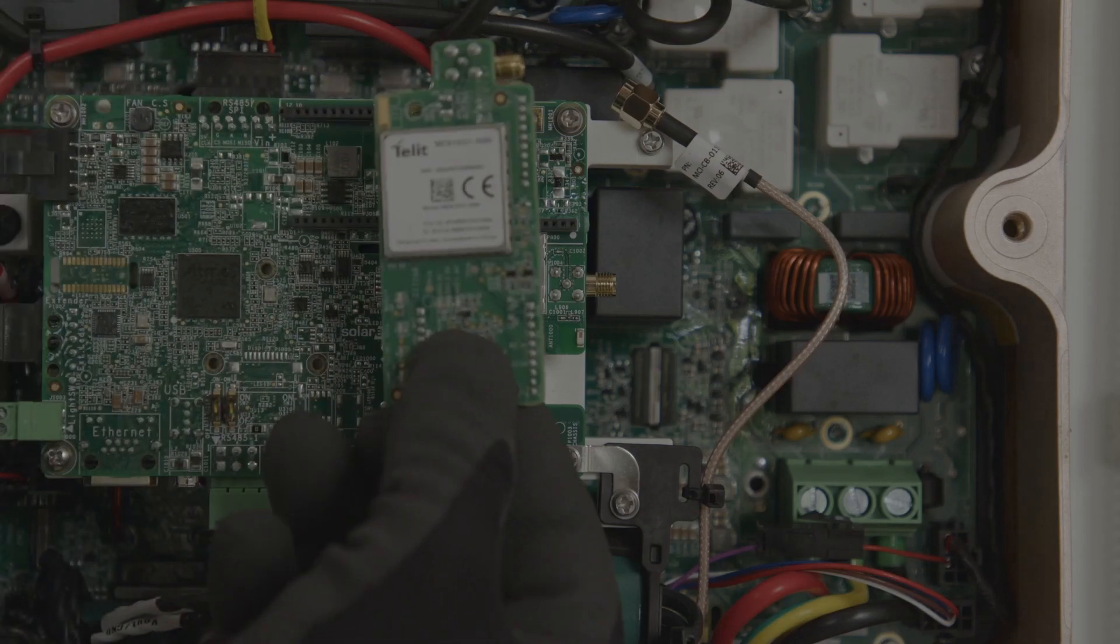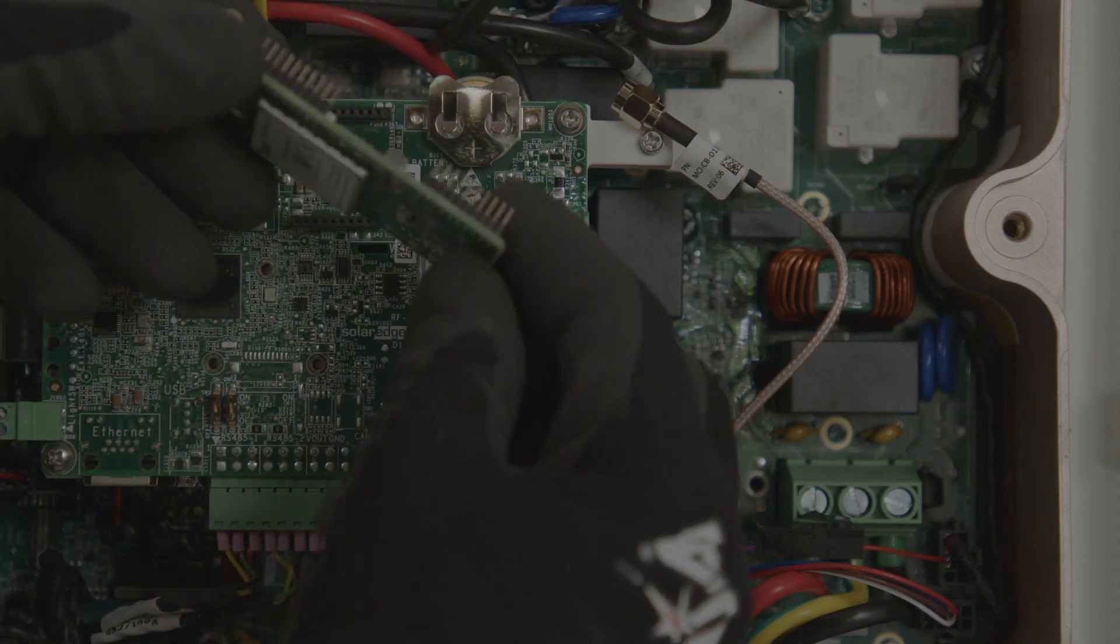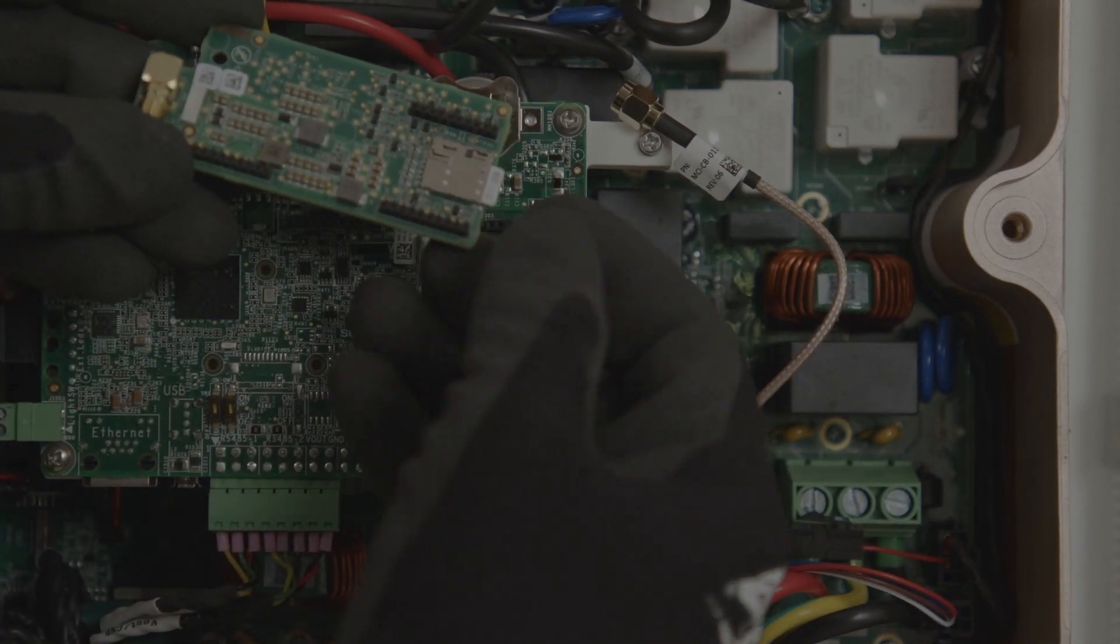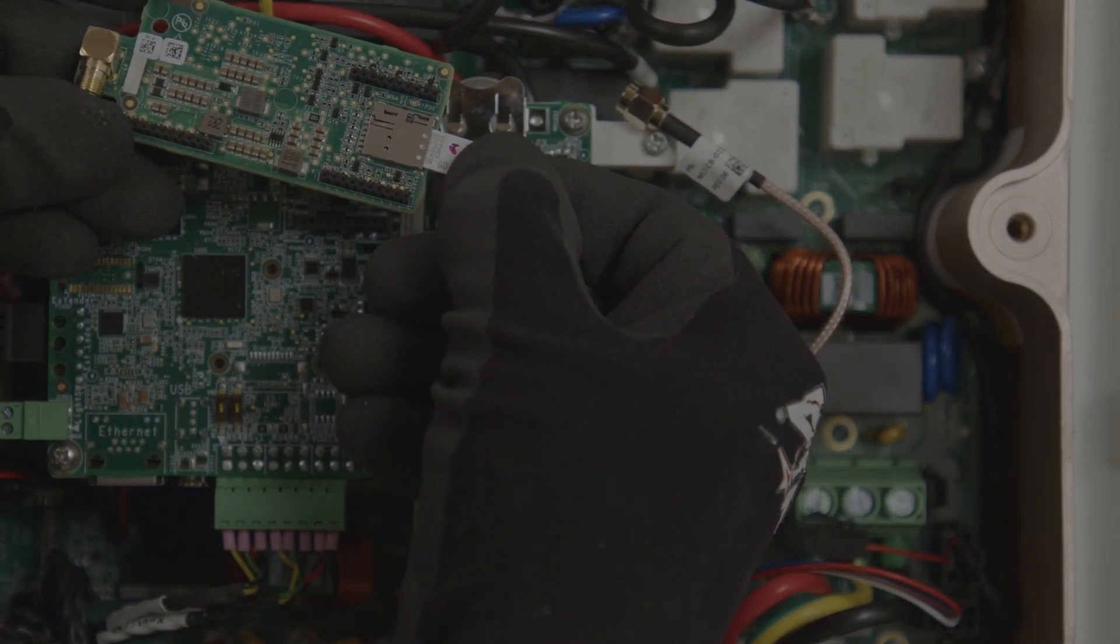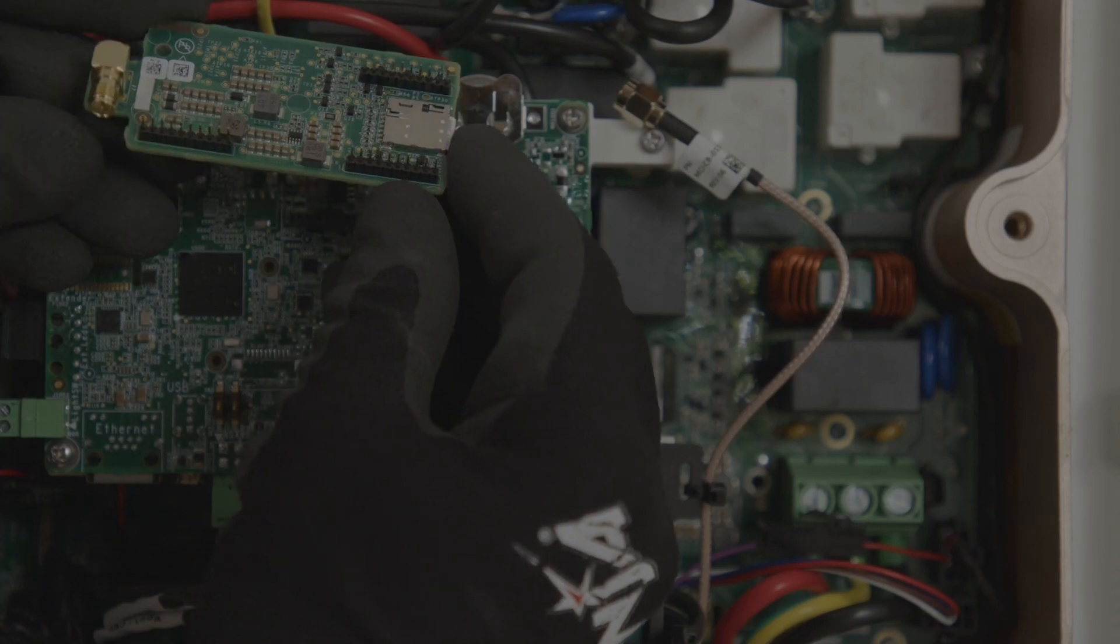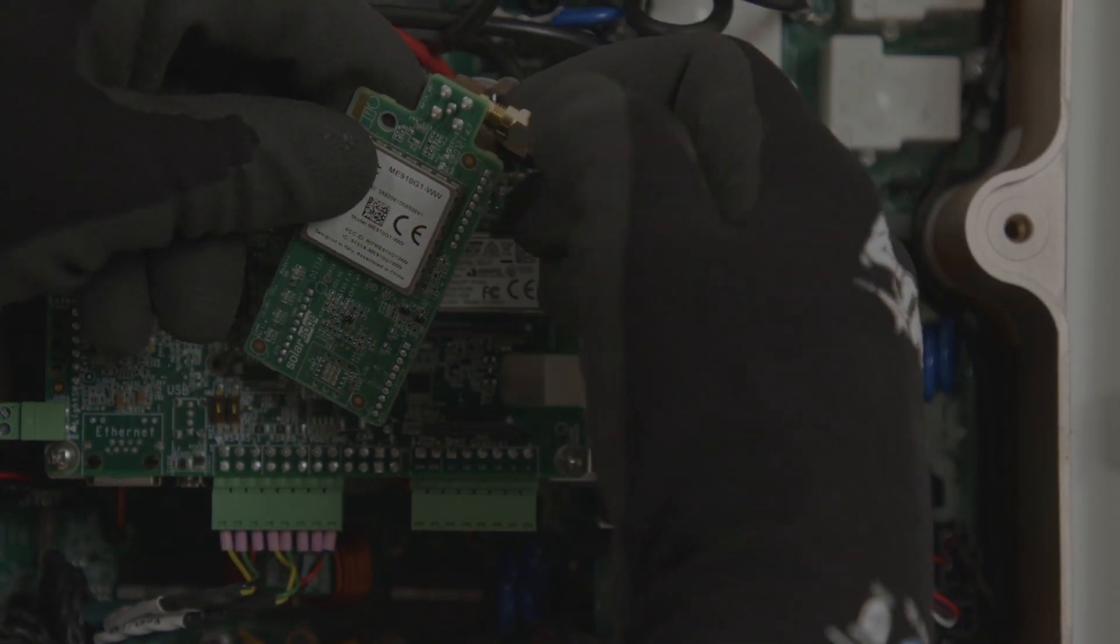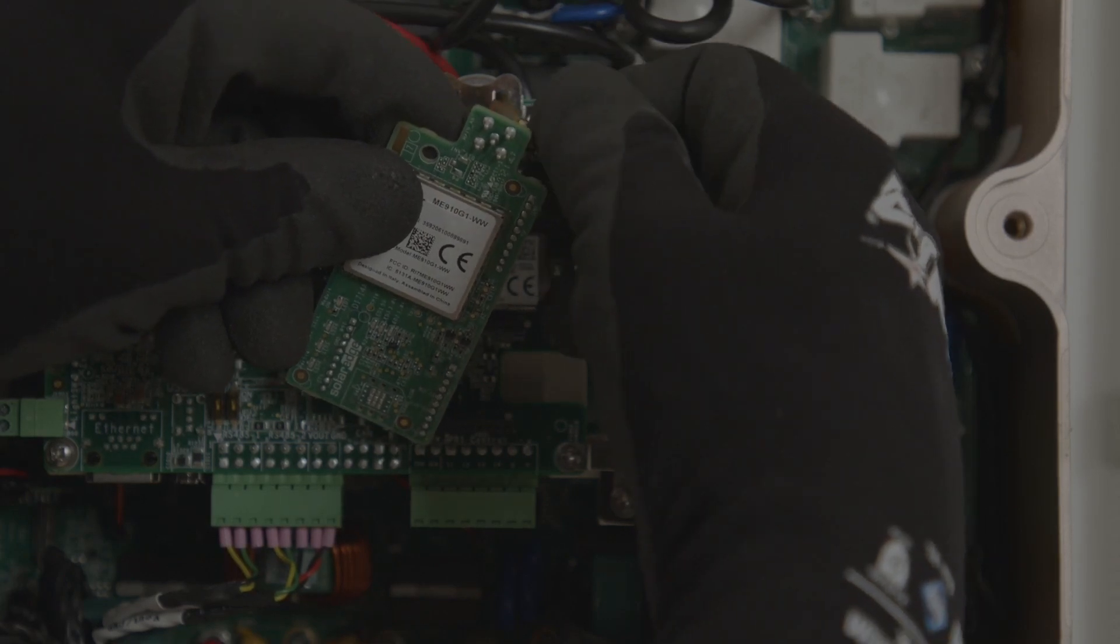SolarEdge offer the Telstra SIM card accessory. If this is going to be used as an alternative for communications, simply add the comms board to the top of the communications panel and wire and connect the antenna.